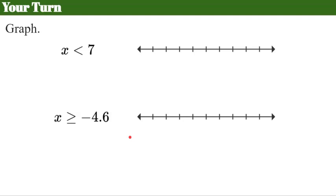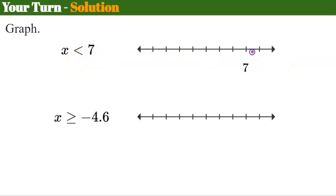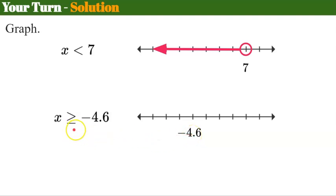Now it's your turn. Please pause the video and graph both of these inequalities, then come back to check your work. Welcome back. The first thing is to put 7 on the number line — it doesn't matter where it falls. I identify it's going to be an open circle because it cannot be equal to 7, so the arrow shades the solution set to the left. For the second one, I put -4.6 as a point and identify I need a closed circle because it can be greater than or equal to, then shade to the right. All of these values on the number line are part of the solution set.